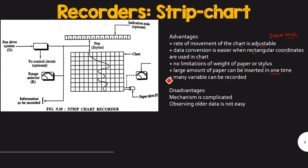Now on another hand, the disadvantages are the mechanism is quite complicated with respect to the circular chart recording system. In case of circular chart recording system, it is quite easier to operate a control mechanism. And observation of older data is a quite tedious process, so it is not easy in this particular system.